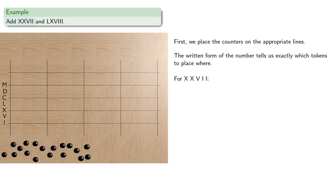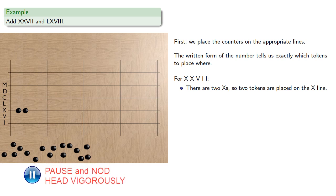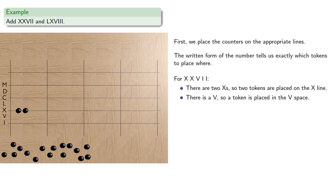For XXVII, there are two X's, so two tokens are placed on the X line. There's a V, so a token is placed in the V space. There are two I's, so two tokens are placed on the I line.